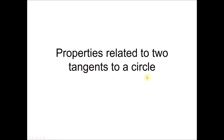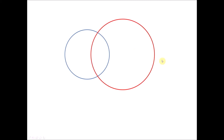There are two tangents on a circle. We have one circle, and if we draw another circle onto this circle, it will form two intersection points. From one intersection point, if we draw a line to the center of the red circle — which is its radius — and then draw a line connecting the center of the blue circle to the center of the red circle, and another line from the intersection point to the center of the blue circle — its radius — we form a rectangle.